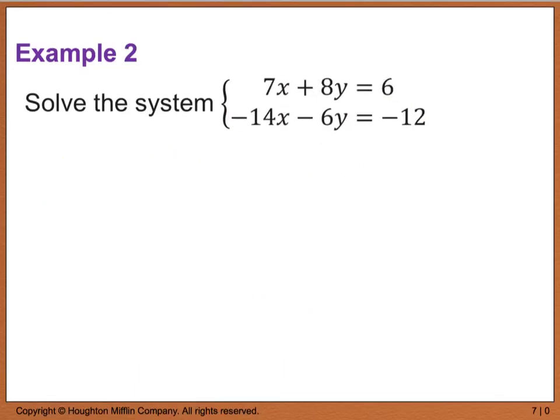Example 2 wants us to solve the system. Now in this case, when I look at my x's, I see that both of these are off - they're opposite in sign, but they're off by a factor of 2. My y's are off as well. They have different signs, but they're not the same. So if I choose to eliminate my x's, all I'm going to have to do here is multiply my top row by a positive 2.